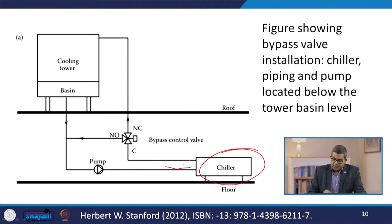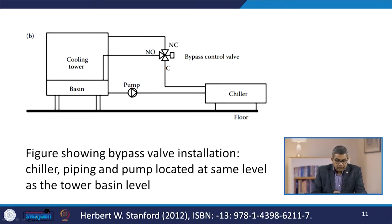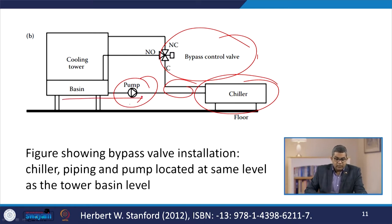This figure shows the bypass valve installation with chiller piping and pump located below the tower basin. The tower basin level and the bypass control valve positions are shown. Similarly, another figure shows the bypass valve installation where the chiller piping and pump are located at the same level as the tower basin.